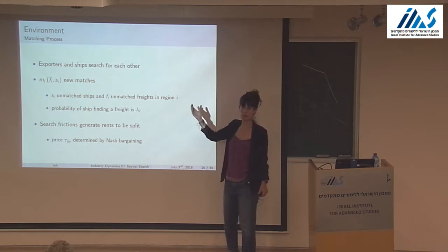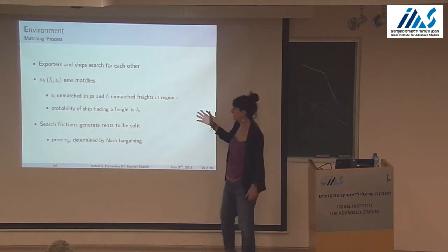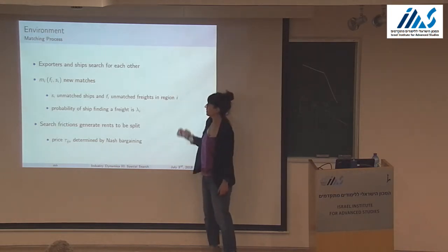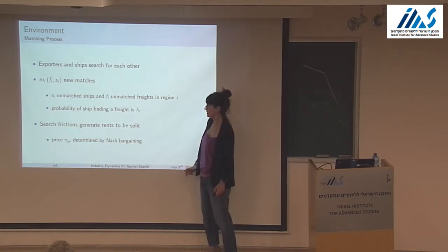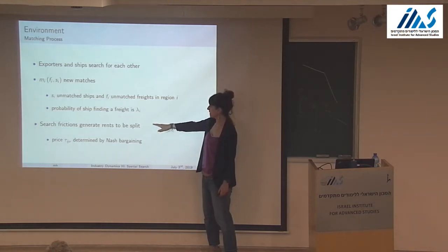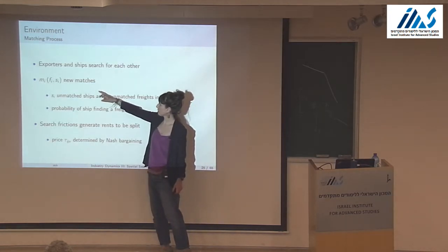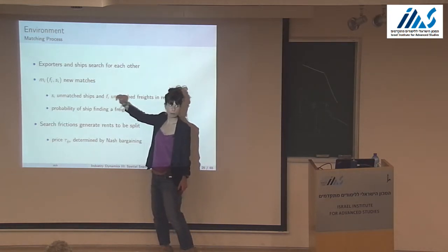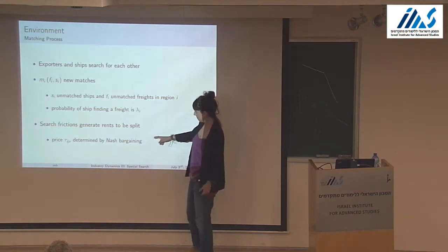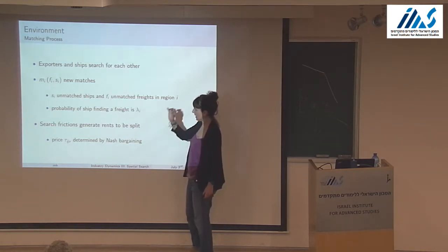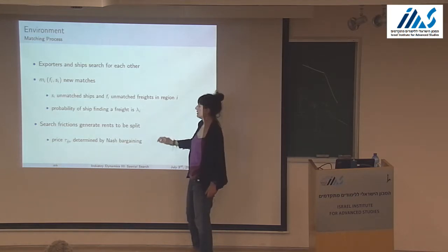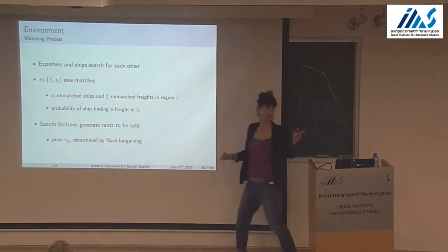The matching function is region-specific. Search frictions generate rents to be split — frictions mean matches are possibly lower than the minimum of the two sides. The price for going from origin I to destination J when the exporter has valuation V is determined by Nash bargaining.